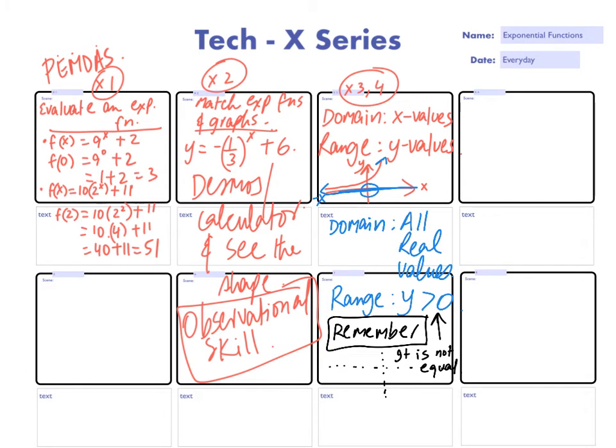So like in this case, if there was a graph for an exponential function and on this axis, they've drawn these dotted parts, and then they drew the graph. And they're saying, hey, what's the range?